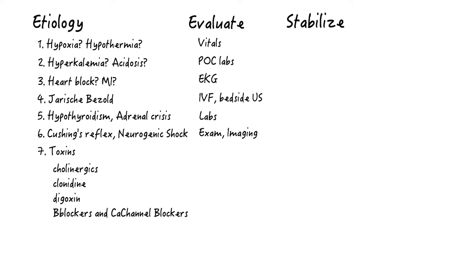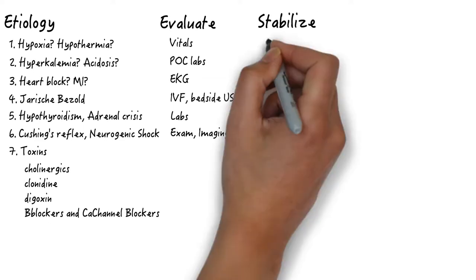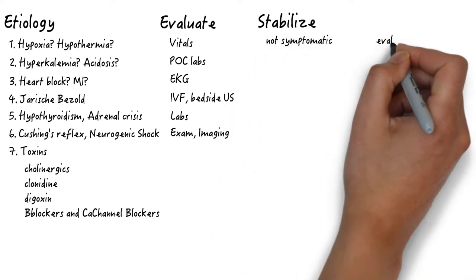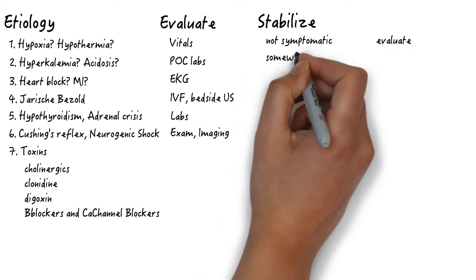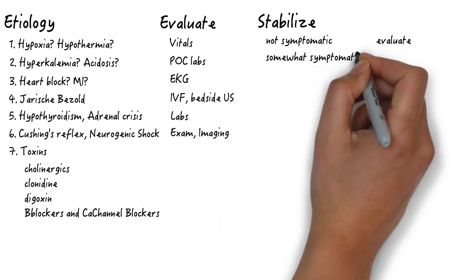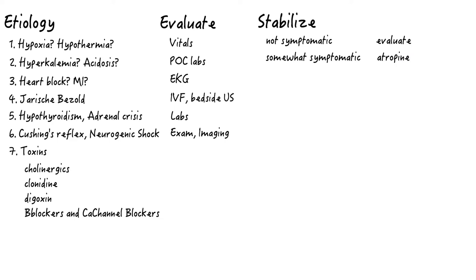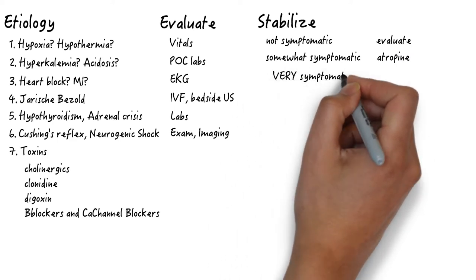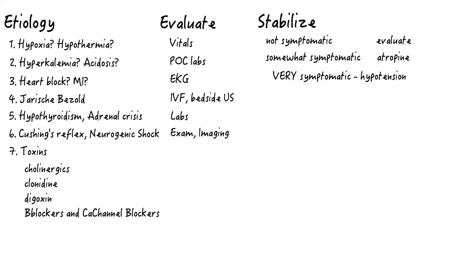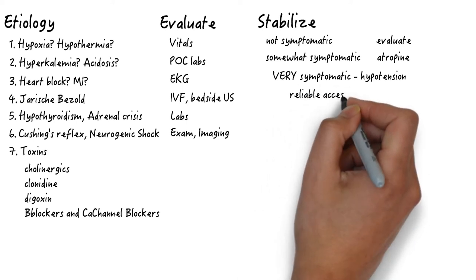The treatment must happen concurrently, before you fully know what's going on. Feel free to follow the ACLS algorithm, which includes doing nothing if the patient's not symptomatic, and trying atropine if they are. We are specifically talking about the hypotensive, sick-appearing bradycardic patient. This automatically puts them in the symptomatic group.